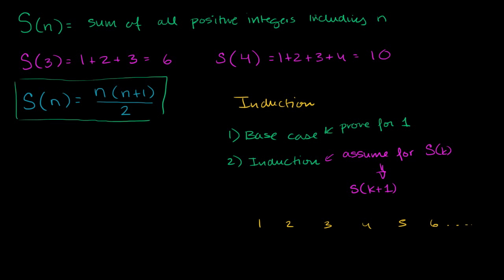We're going to prove it for 1 — that this formula applies when n is 1. Then we're going to prove that if we know it's true for any given k, it's true for the next one. So if we know it's true for 1, the induction step says it must be true for 2. And if it's true for 2, then it must be true for 3. If it's true for 3, it must be true for 4. And you can just keep going on and on forever, which means it is true for everything.